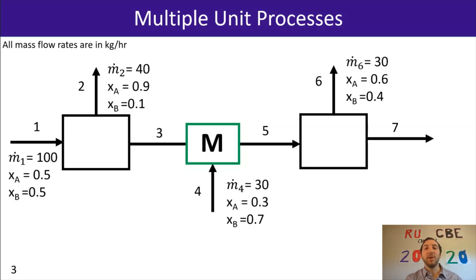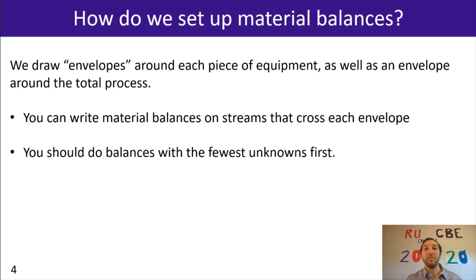When setting up material balances for the system, we're going to draw envelopes around each piece of equipment and an envelope around our total process. As you remember, in all of our systems there's always an opportunity to make a total material balance, and that's a really convenient and handy material balance to use. We still want to do that total material balance, and for each envelope we can write material balances for the streams. We can size up which envelope has the fewest unknowns — that's probably the one we want to start with.